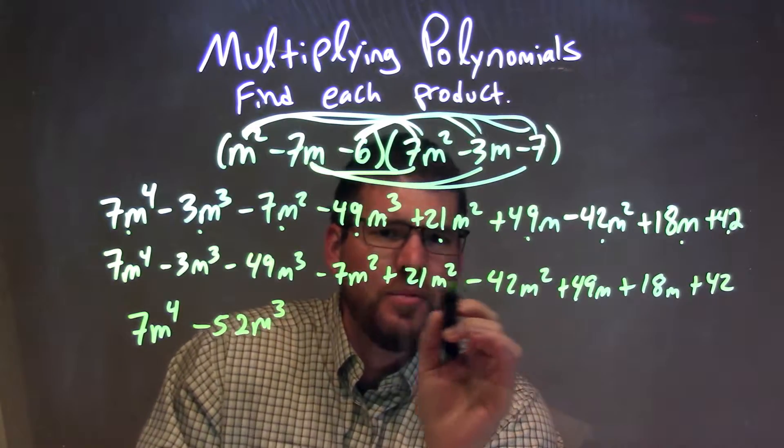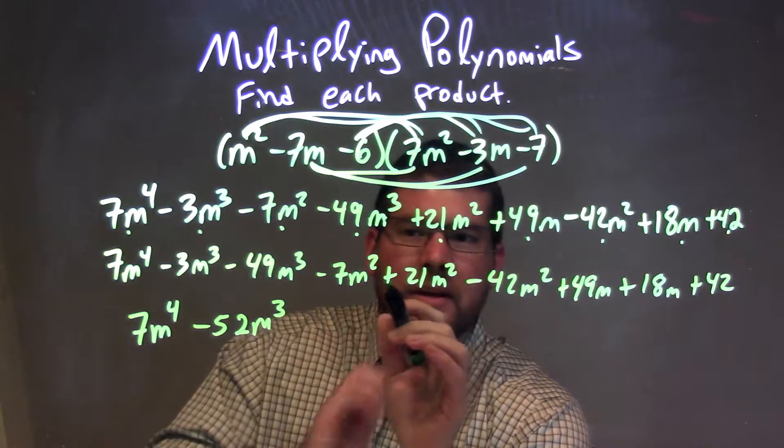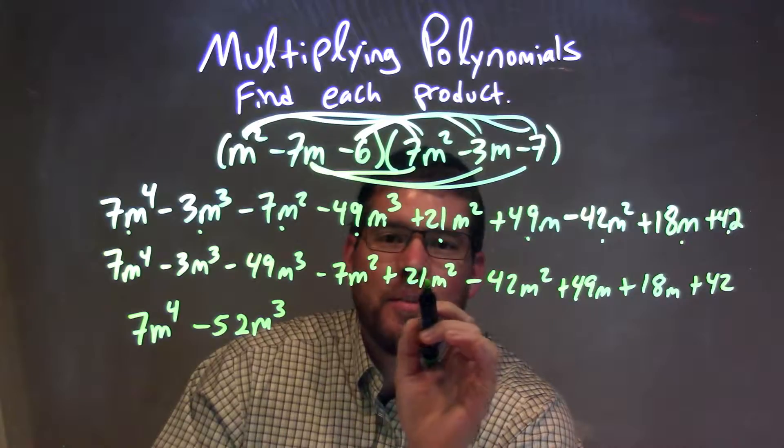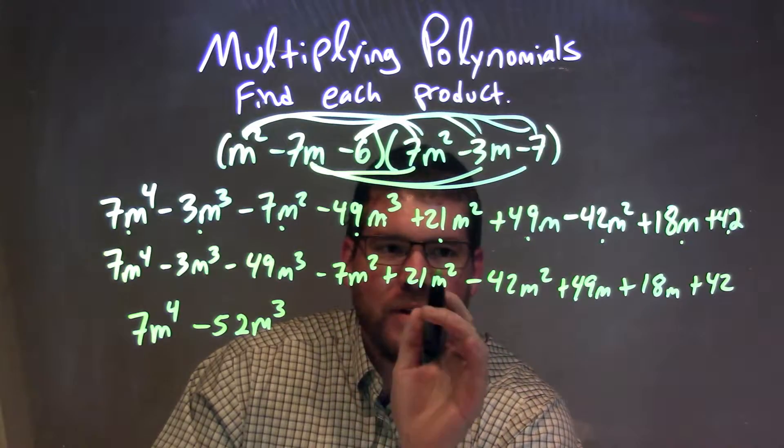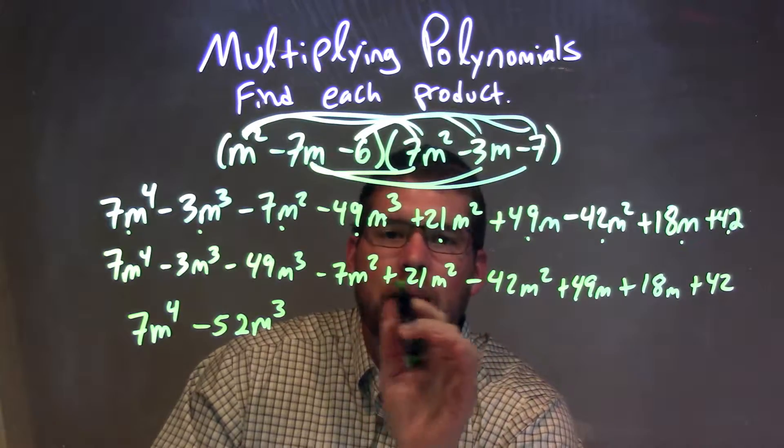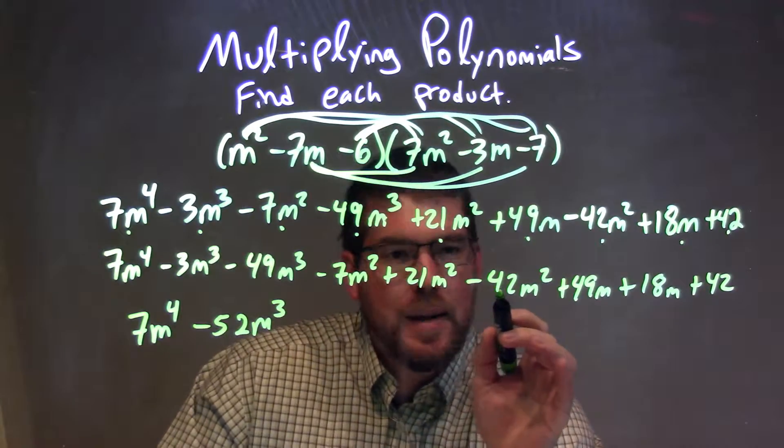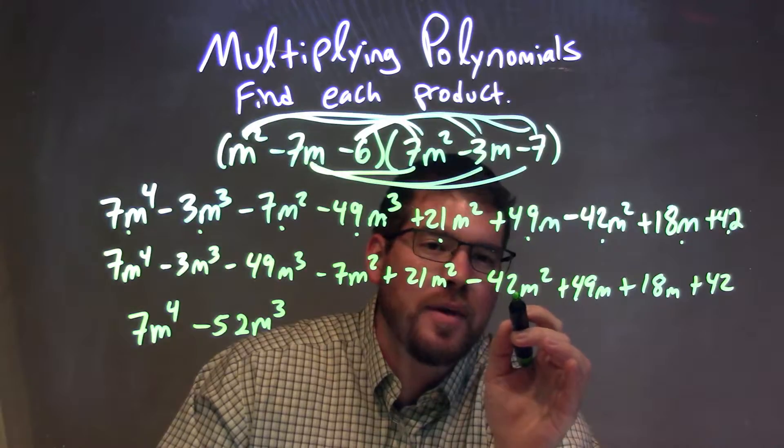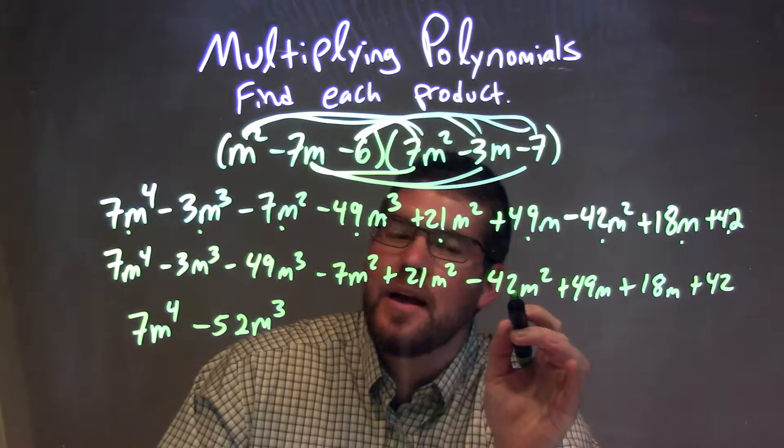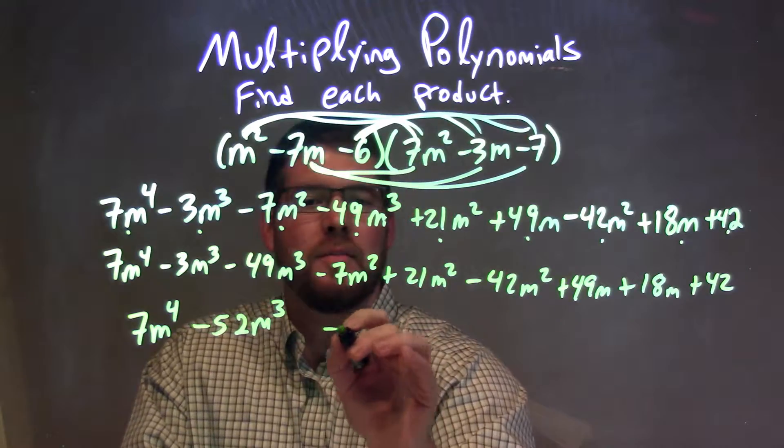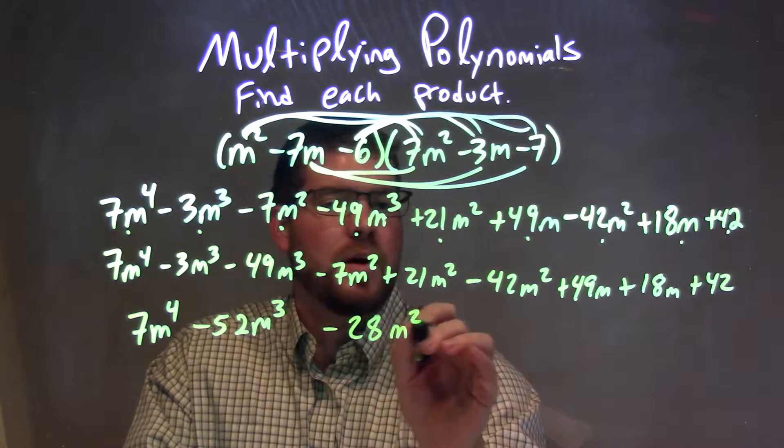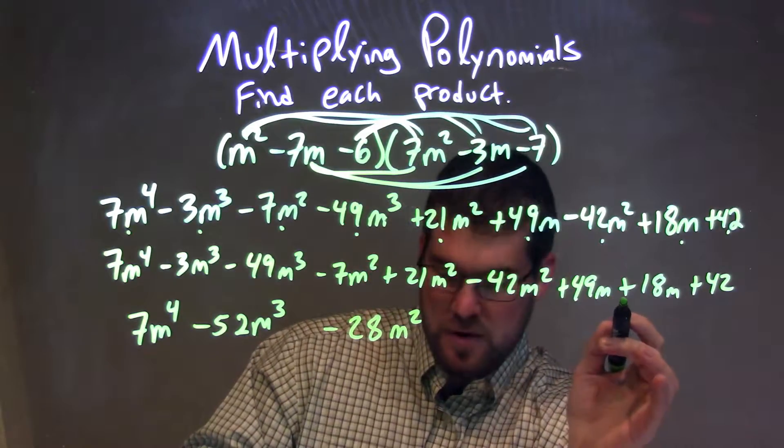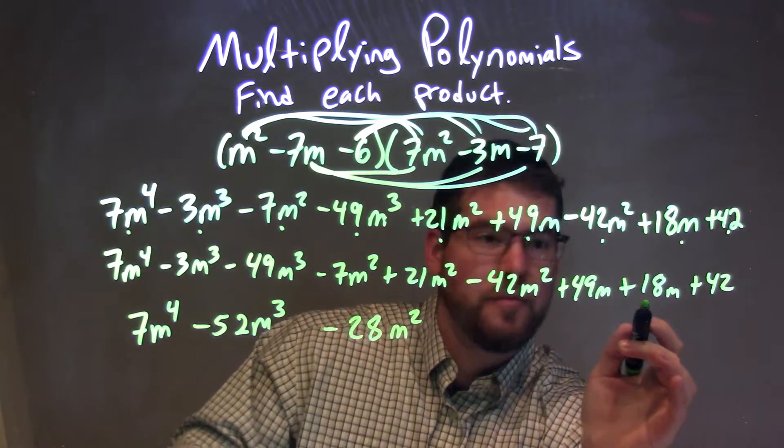So now we have to combine these here. Minus 7m squared plus 21m squared is a positive 14m squared, and then positive 14 minus 42 gives me a minus 28m squared. So we have minus 28m squared. Let me just go check that. Minus 28m squared, so far we're good, fantastic.